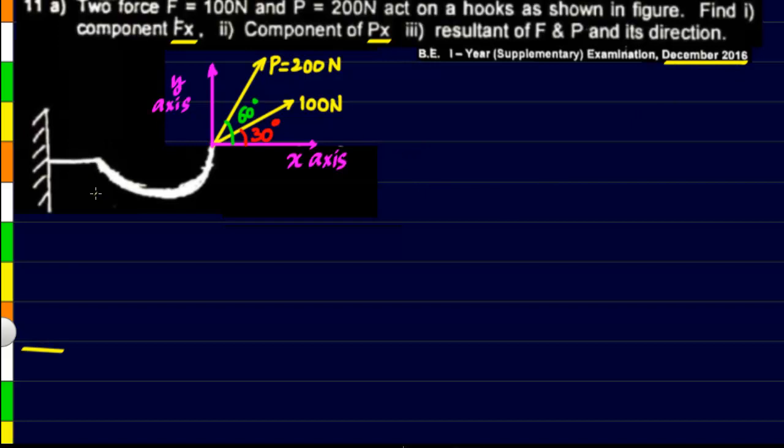The question has been given like this: we have a fixed bar and there are two forces acting on it. One force is the force P which is 200 newtons, the second force is the force F which is 100 newtons. The angles of all the forces with the horizontal x-axis have been given to us and we have been asked to find three things.